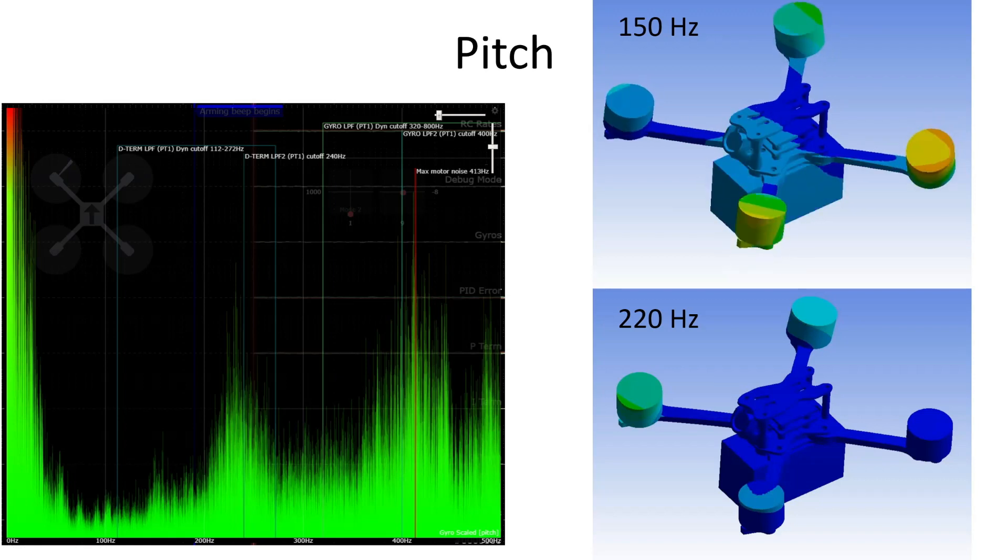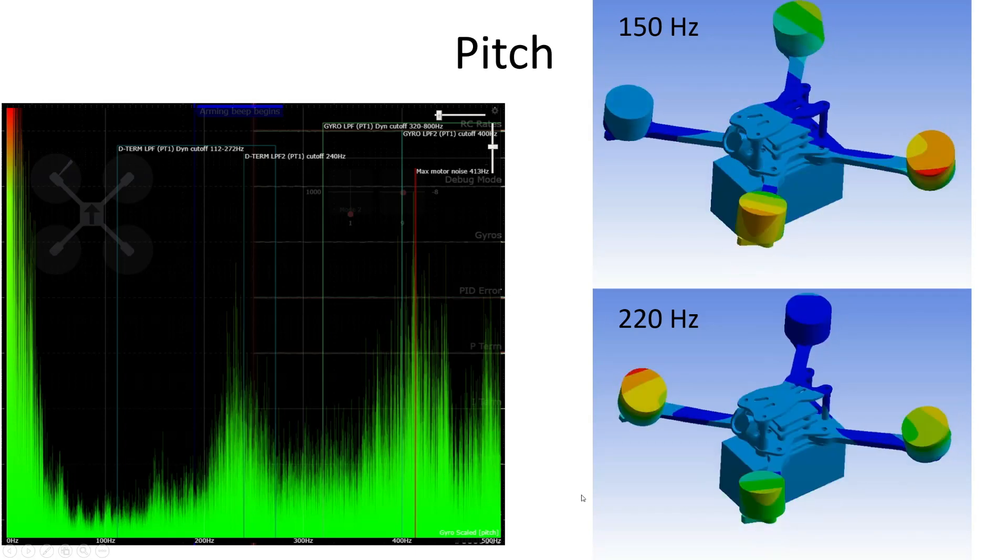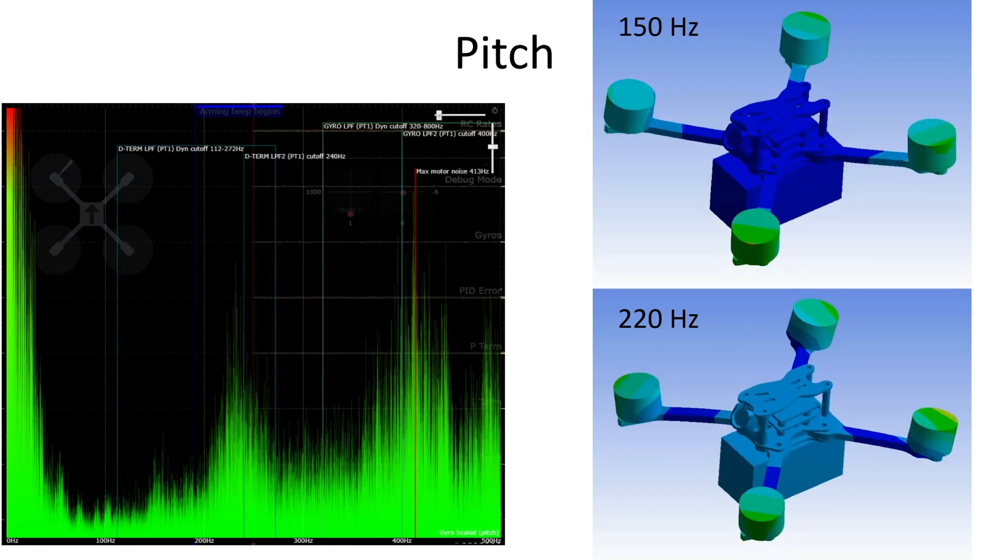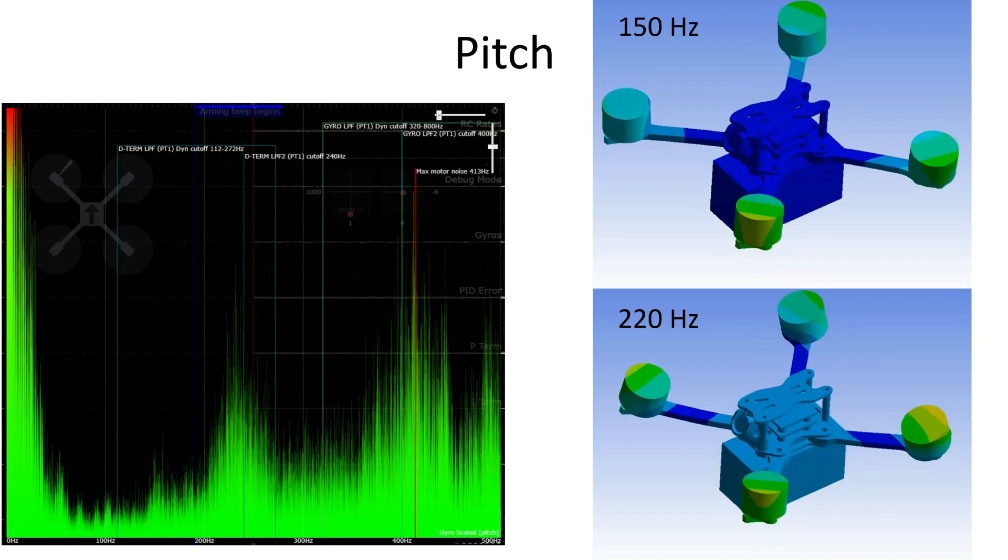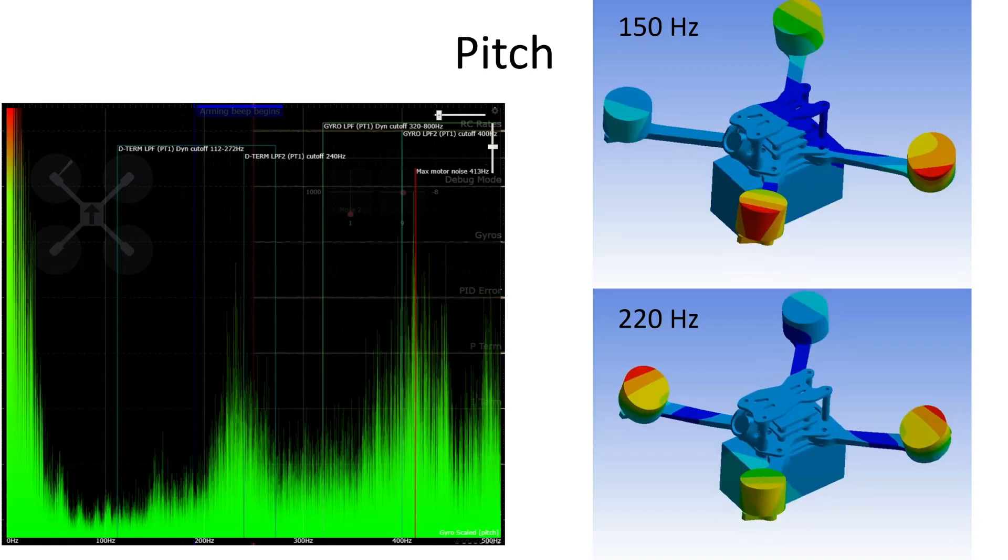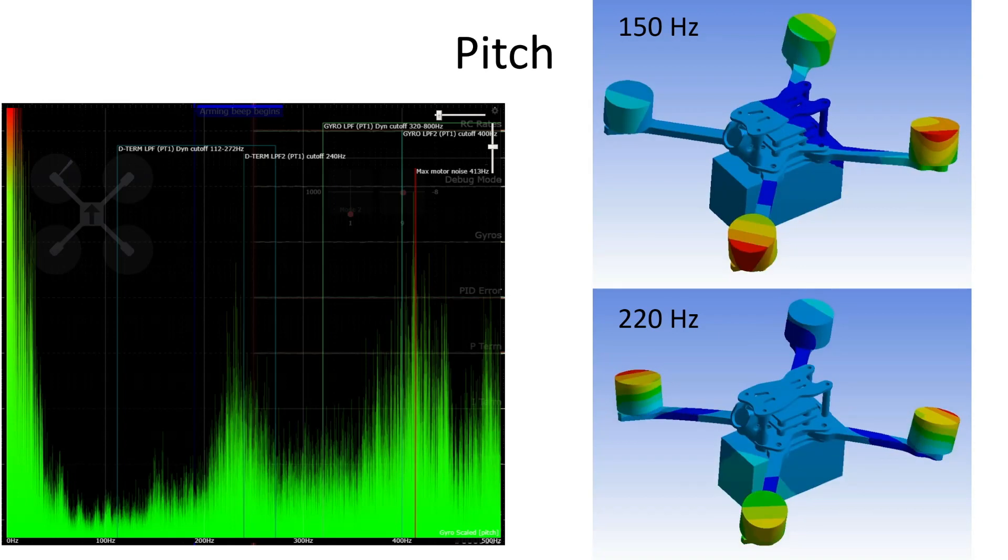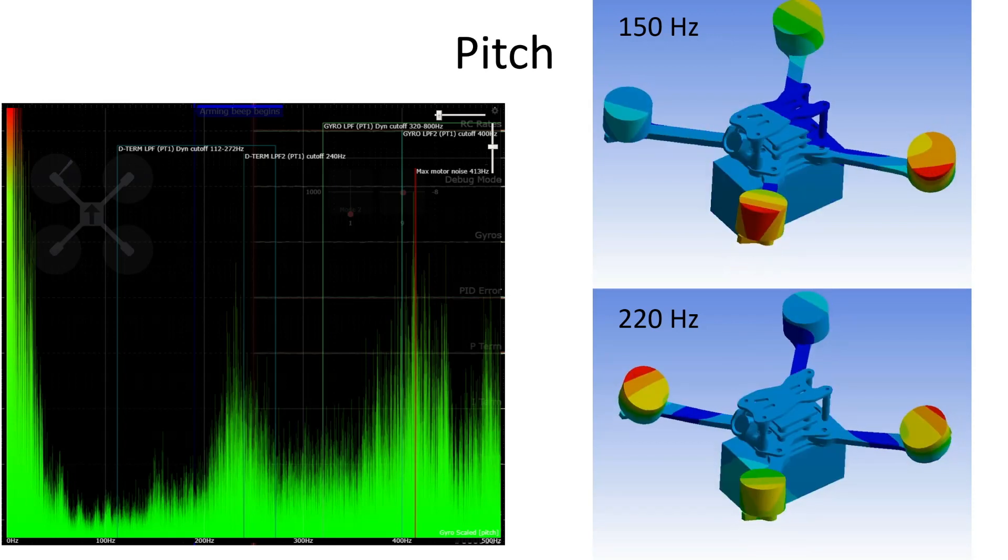Now this is very typical for the first resonant mode of a traditional quadcopter frame. We've got arms bending up and down, and we tend to find that the opposite corners move together. If we look now at 220 Hertz, we can see that this is quite similar actually to the 150 Hertz mode of vibration, but here we've got all of the motors moving up and down together rather than opposite corners moving in antiphase to each other. And we can see that there are other mode shapes that are involved here. It's not a pure movement of the motors up and down and it's those other mode shapes that are coming in that are meaning that we can see this on the pitch axis.